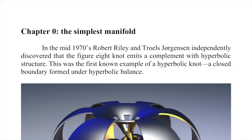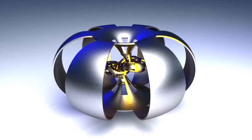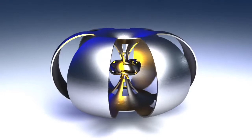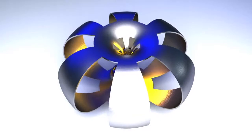Chapter 0: The Simplest Manifold. In the mid-1970s, Robert Riley and Terrells Jorgensen independently discovered that the figure-eight knot complement has a hyperbolic structure. This was the first known example of a hyperbolic knot — a closed boundary formed under hyperbolic balance. As this is our first introduction to this basic shape, note that the cutouts in the image are not part of the geometry — they're there so that we can see the inside. Fill in the cutouts symmetrically; that's the two-dimensional boundary we're talking about.